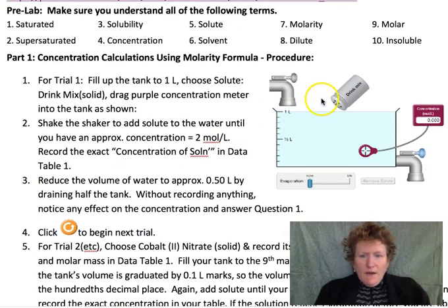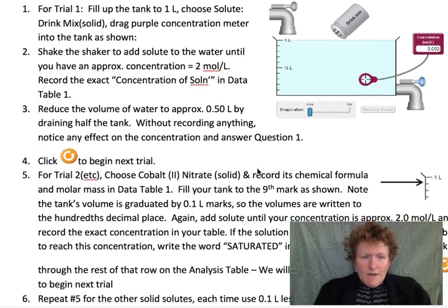We're going to use different chemicals. One of them is drink mix, the rest of them have a chemical formula that you can see on the shaker or the dropper. We're going to use this meter here to tell what the concentration is and we're going to do some experiments varying the concentration.